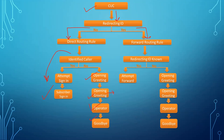From the opening greeting call handler the call can go to operator or goodbye, depending on how the call handler is configured. If the call has a redirecting ID, it hits the forward routing rule. If the redirecting ID is known, the call is forwarded to that number. If the redirecting ID is not known — not in CUCM or Unity — it again goes to the opening greeting, which plays the welcome message.